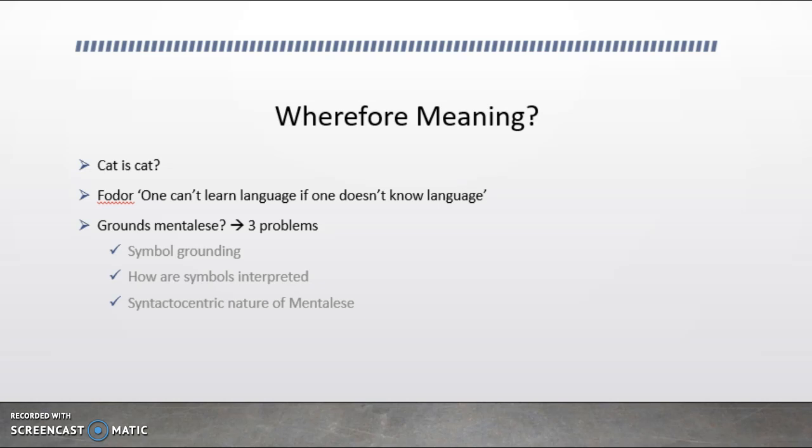The second problem concerns how symbols in mentalese are interpreted. Thoughts are internal representations in our head, and how do they get interpreted as representations of whatever they are representative of? We need a miniature version of ourselves inside our head to do the interpreting for us. It is a circular argument, like the caretaker, and it will always fail.